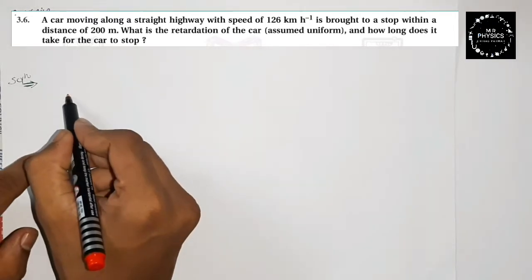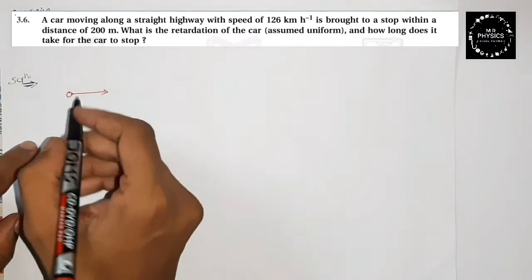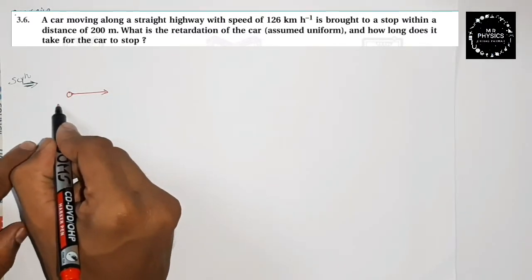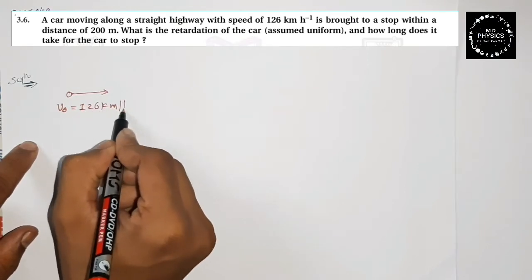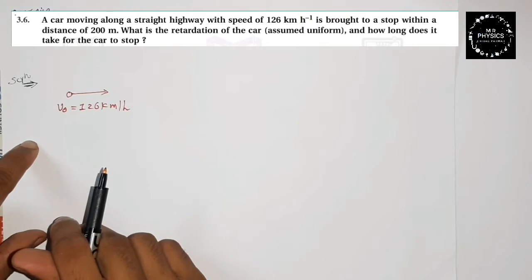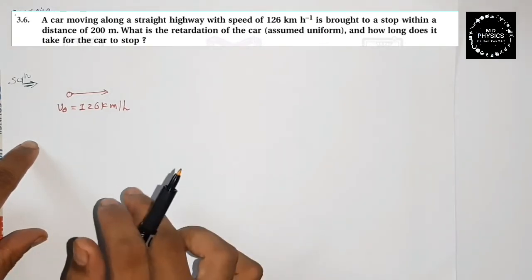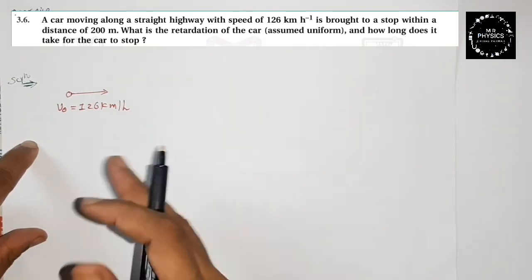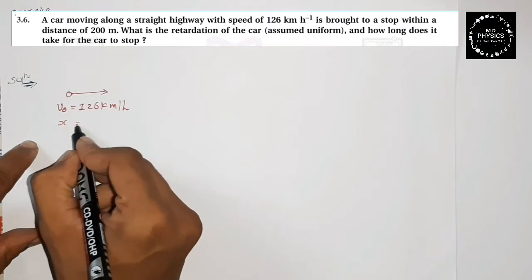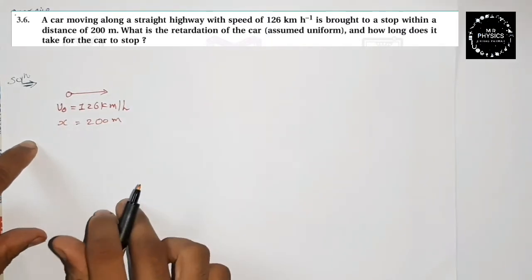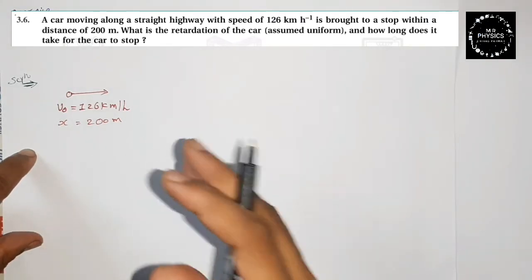Here you can see that a car is moving on a straight highway. The initial speed v₀ is equal to 126 kilometers per hour. After that, they tell us the car has to be brought to a stop within a distance of 200 meters — so the distance given to us is 200 meters.